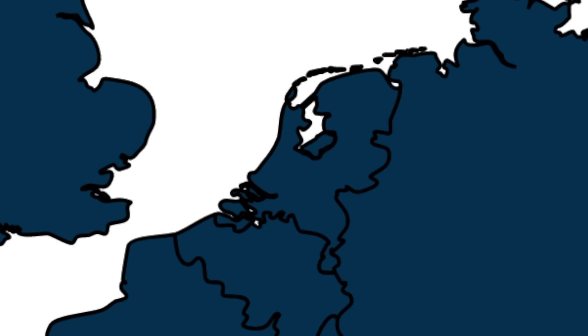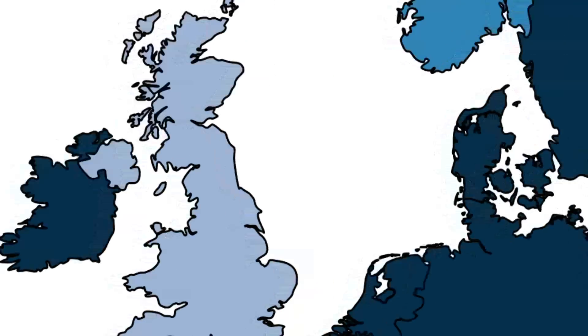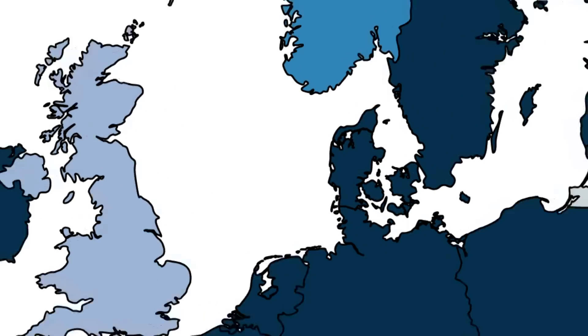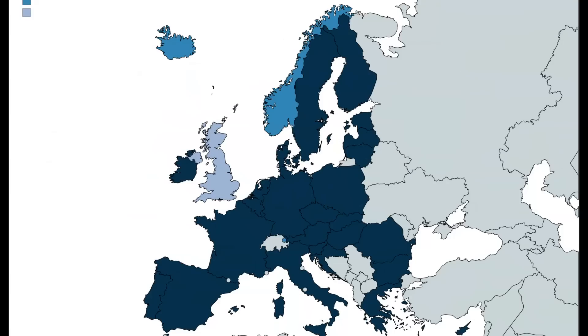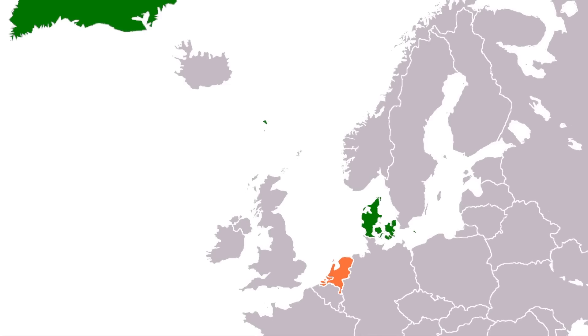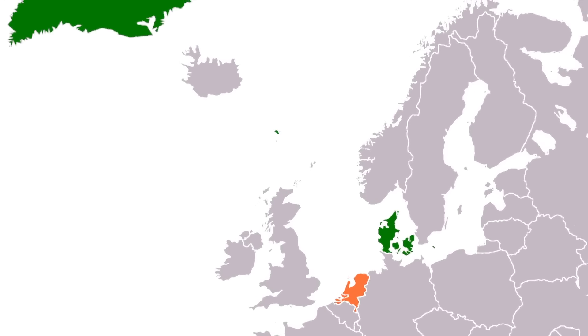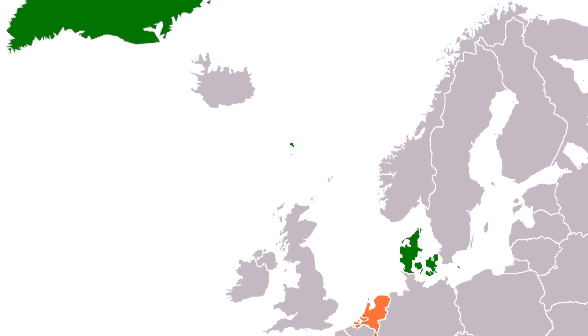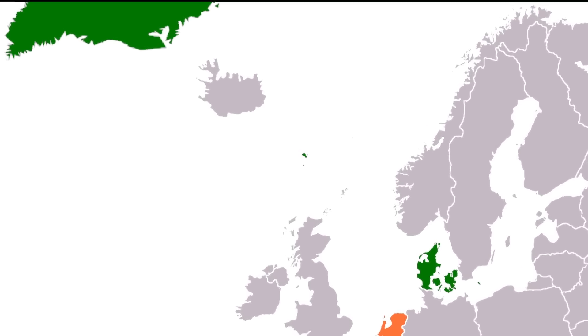This is probably most strongly seen in how the Netherlands, the UK, and Denmark are in the EU, but some of their constituent countries, like Greenland, are not — despite being kind of in the same country, but also kind of not.